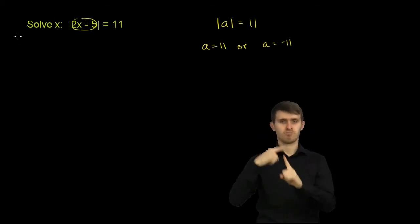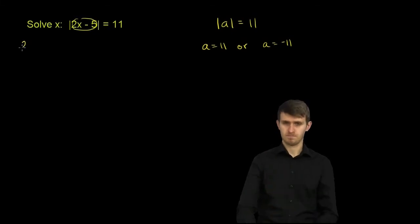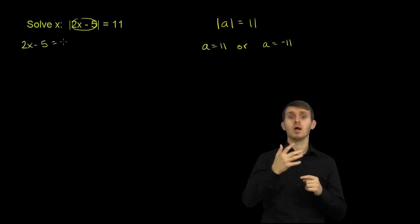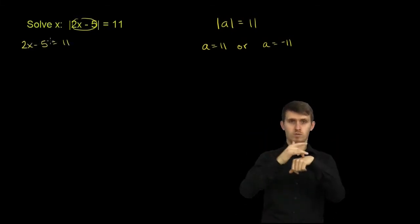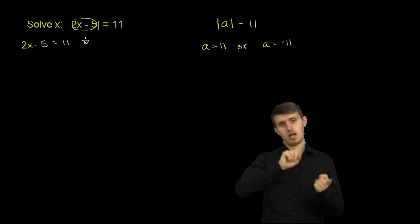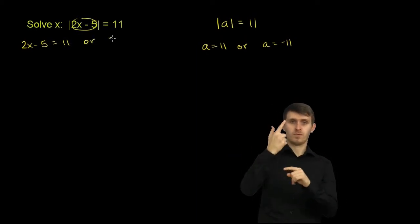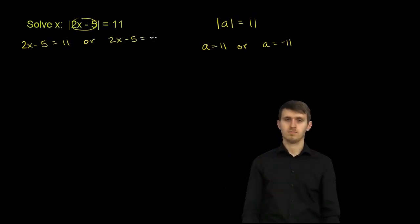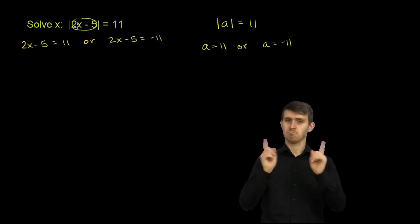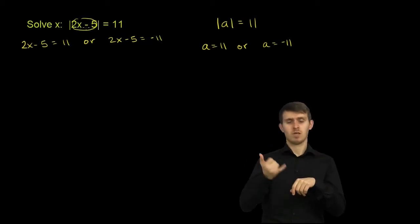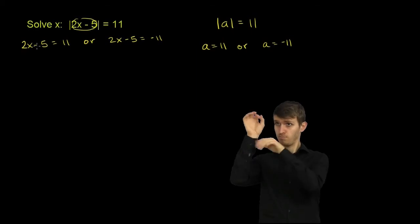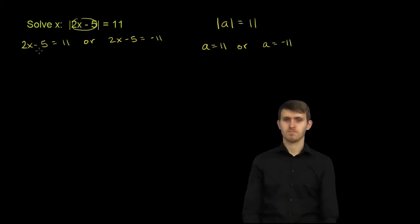So let's write that down. So 2x minus 5 could be equal to 11, or 2x minus 5 could be equal to negative 11. Because in either case, if you took its absolute value, you would get 11. Now let's just solve each of these equations.